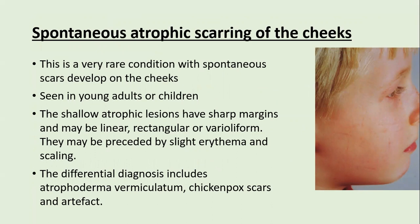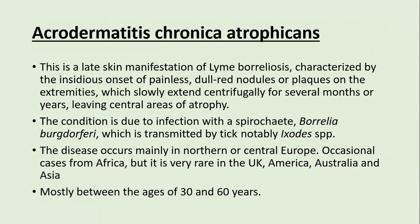Spontaneous atrophic scarring of the cheek is a rare condition where scars develop spontaneously in young children and adults. The scars are shallow, atrophic, with sharp margins, linear, rectangular, or varioliform, and may be preceded by slight erythema or scaling. There is no history of trauma. Differential diagnoses include atrophoderma vermiculata, chickenpox scars, and dermatitis artefacta.